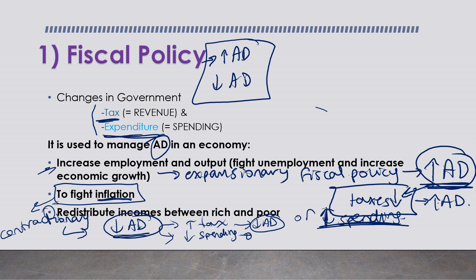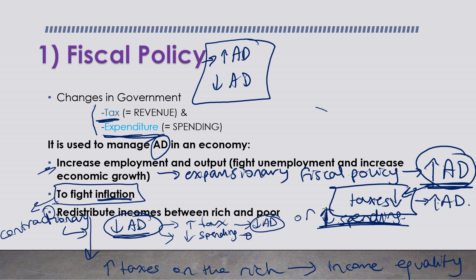Another way fiscal policy is used is to redistribute income between the rich and the poor. To achieve income equality, the government will increase taxes on the rich. This kind of tax, as we covered before, is called the progressive taxation system.